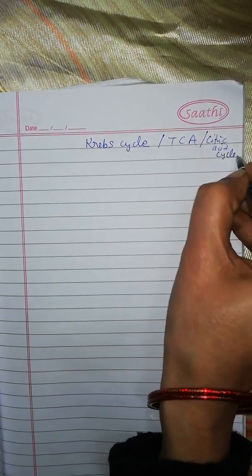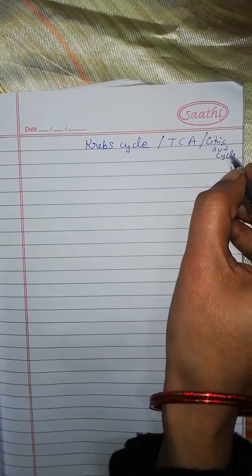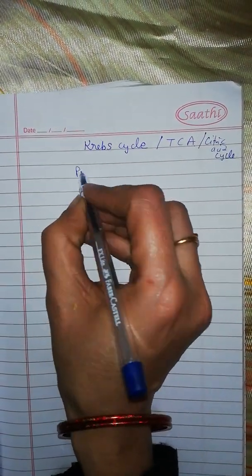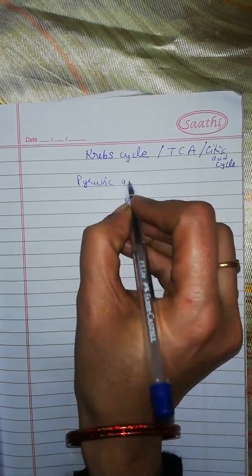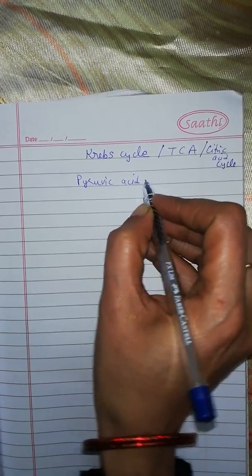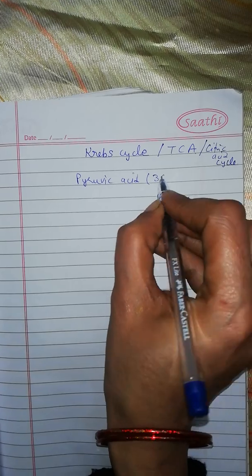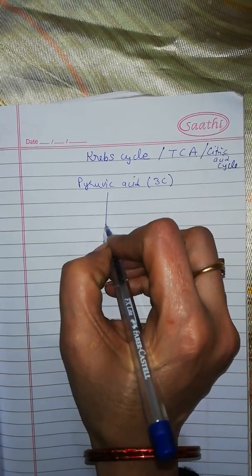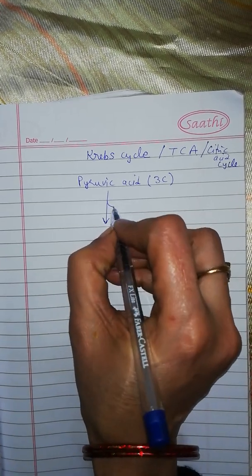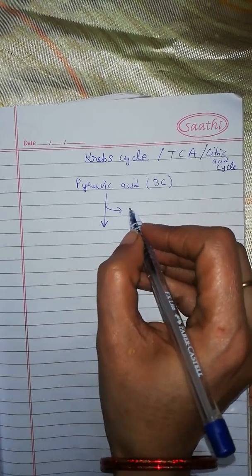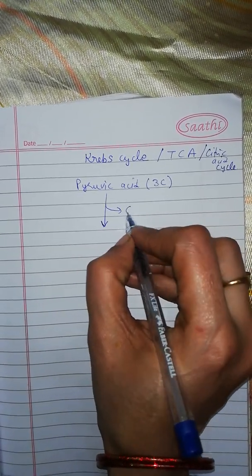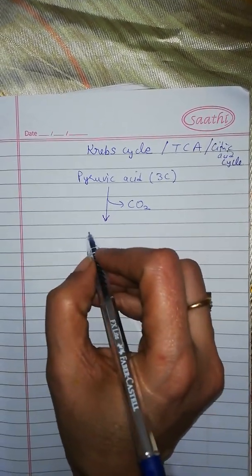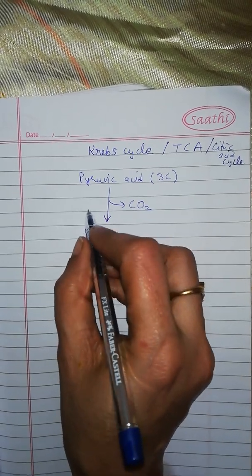This cycle is also known as citric acid cycle because the first formed product is citric acid. We can start with a pyruvic acid molecule. This pyruvic acid is formed as a result of glycolysis and contains three carbon atoms. This pyruvic acid gets decarboxylated — it releases a molecule of CO2 — and a two-carbon compound is formed.